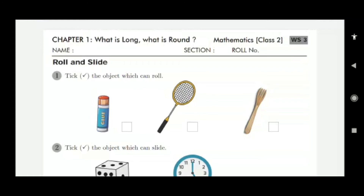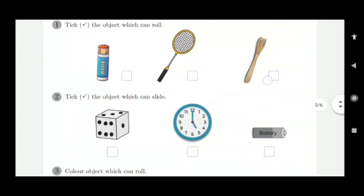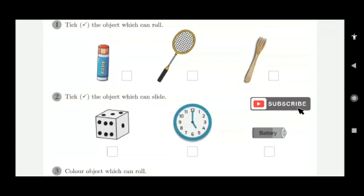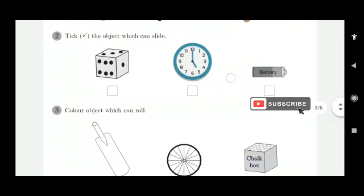Then, tick the object which can slide. The first one can slide — put a tick. A clock will also slide — put a tick on these two. But a battery rolls, so that is wrong — put a wrong mark.